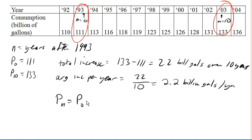In this case, we know our P0 is 111. So we'll go ahead and put in 111 for our initial amount. And our D we just calculated was 2.2. So we'll go ahead and put 2.2 in for our D. And there is our explicit equation.